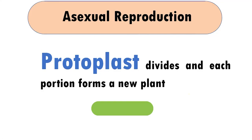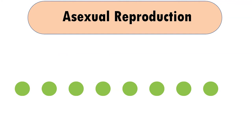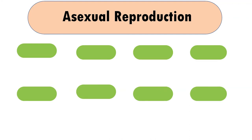In asexual reproduction, the protoplast — that is, the cellular contents of the algae — will divide, and once they divide and detach from the parent plant, each portion will form a new plant. If you consider this particular diagram as one single individual cell, it divides into different types of protoplast fragments, and those divisions will later form new individual plants. This is a graphical representation just to understand the process properly.